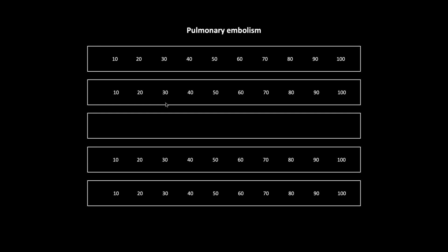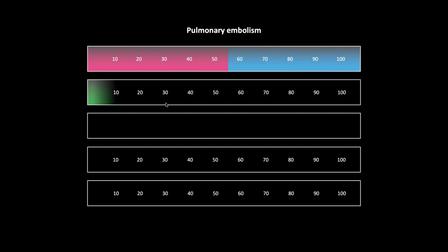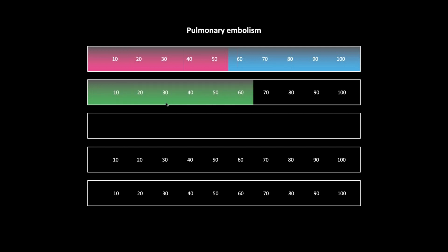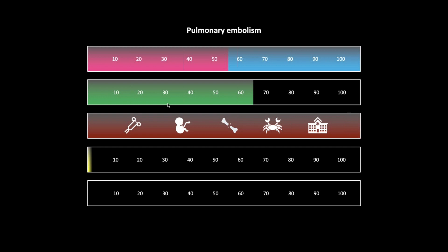Our first case is pulmonary embolism — pretty much equal men and women, typically ages 60 to 70, although women are typically the younger and men the older patients. The annual incidence is 65 per hundred thousand, making this the most common entity we'll be seeing tonight. The highest-level risk factors are surgery, pregnancy, long bone fracture, cancer, and institutionalization. Mortality is 10% when accurately diagnosed and treated, but 30% if it goes undiagnosed at presentation.